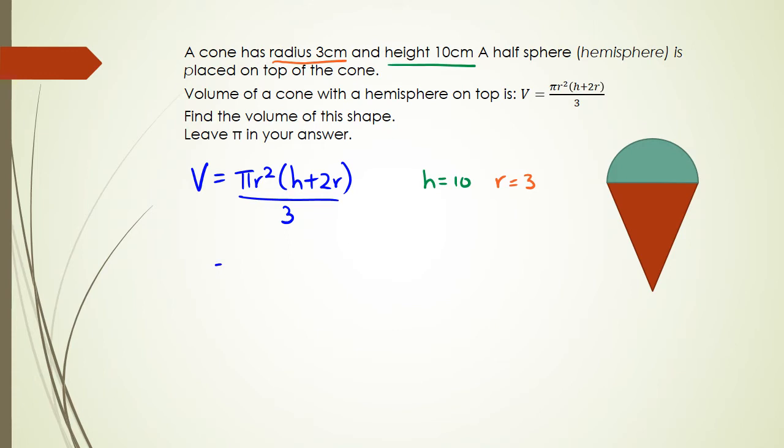In our volume equation, we're just going to substitute h and r. We're going to get π × 3² × (10 + 2 × 3) / 3, where the whole thing is divided by 3.